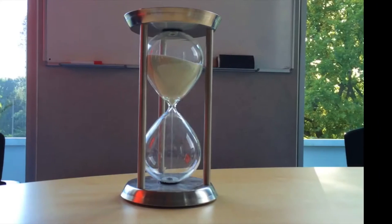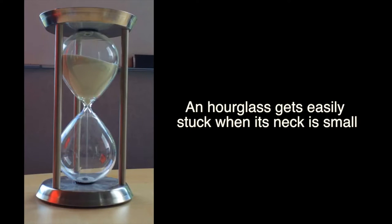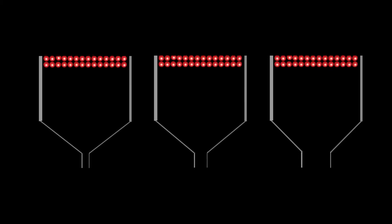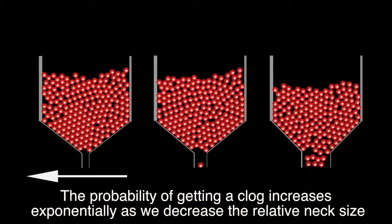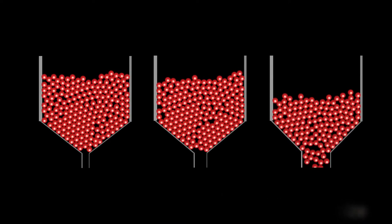And this happens typically when the neck is small. By small meaning? Meaning that the neck is small compared to the particle. So if I have a neck where only one particle can pass, the probability of getting a clog is pretty high.